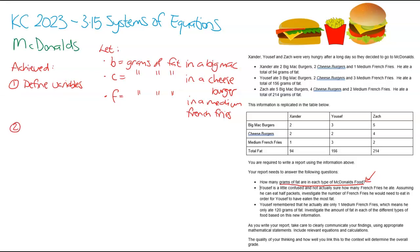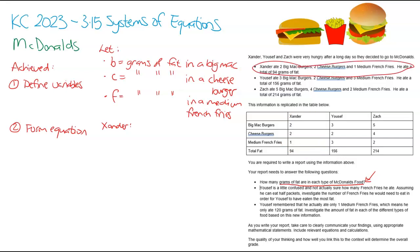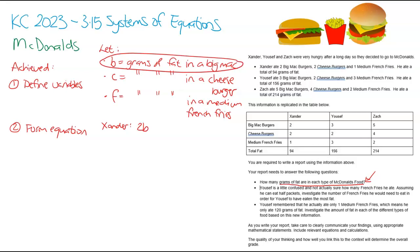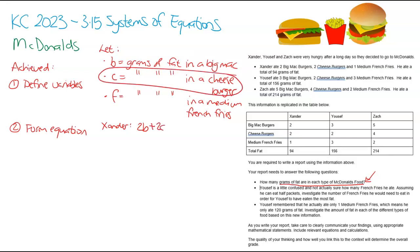Step number two, I need to form some equations. We form equations so we can solve them, which hopefully means we can answer the questions. Let's look at Xander first. So 2 Big Macs in algebra is 2B, because we said the grams of fat in a Big Mac was B. So 2B will be the grams of fat Xander ate from the Big Macs. The fat from the cheeseburgers will be plus 2C, and then he had one French fry, so plus F. That comes to 94.